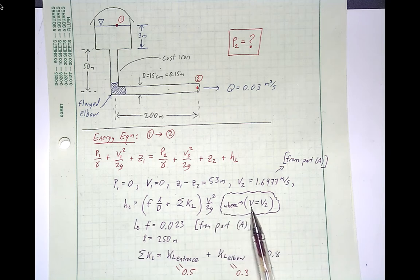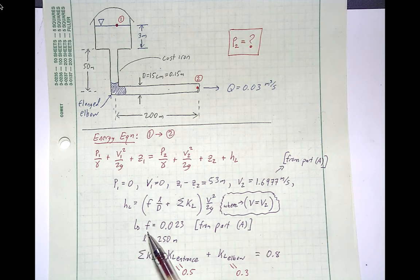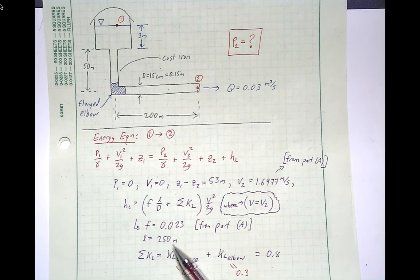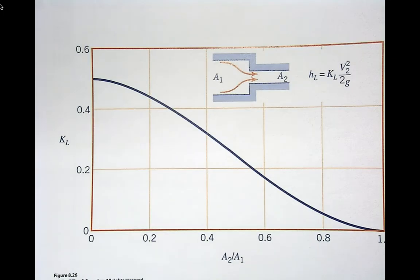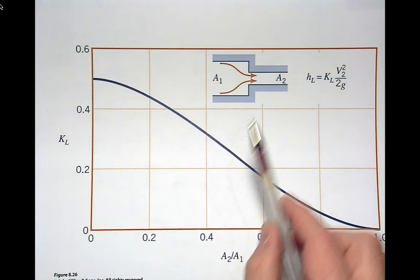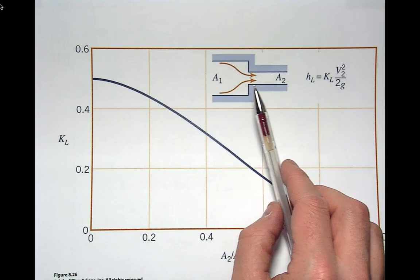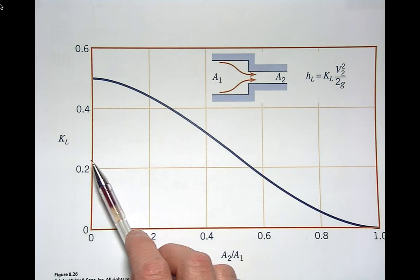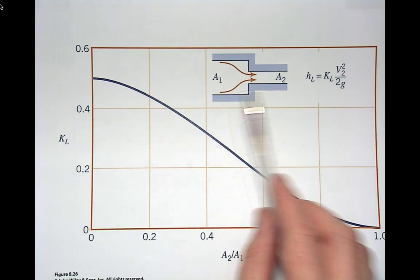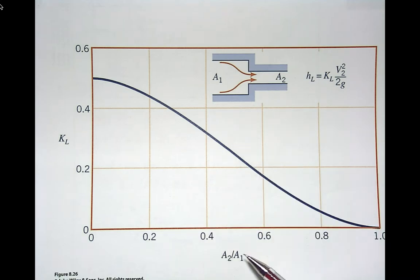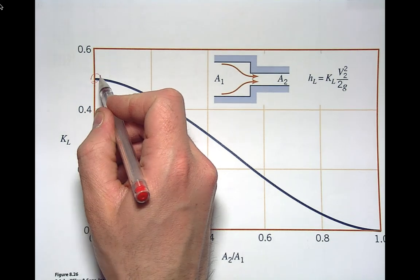The minor losses and major losses both get multiplied by the velocity head to give dimensions consistent with the equation. The velocity through the pipe equals V2. For the entrance loss coefficient, we use the contraction figure. Since the tank area is much larger than the pipe, the ratio A2 to A1 goes to zero, so we take the loss coefficient of 0.5.